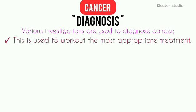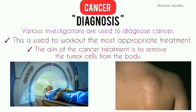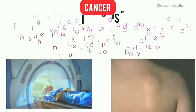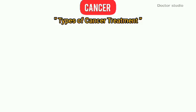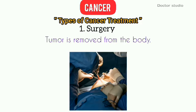This is used to work out the most appropriate treatment. The aim of cancer treatment is to remove or destroy the tumor cells in the body. The main types of cancer treatment include: 1. Surgery, where a tumor is removed from the body.